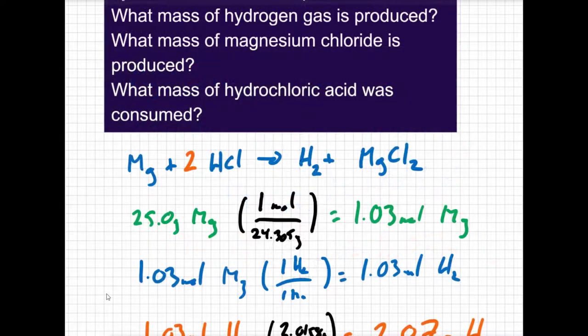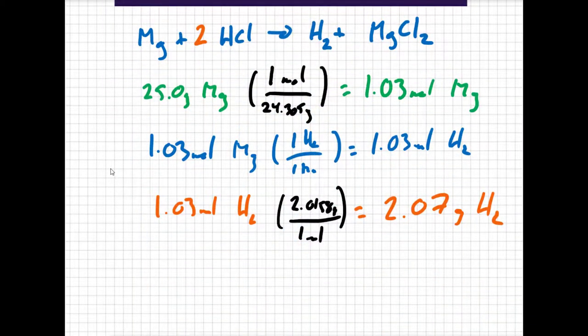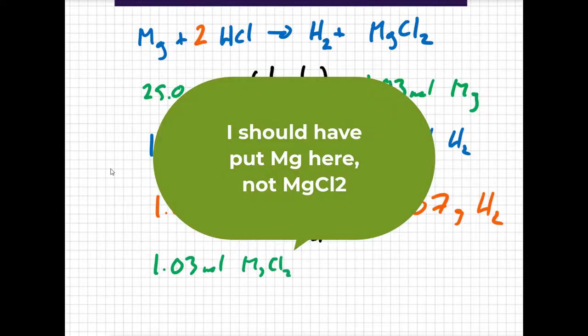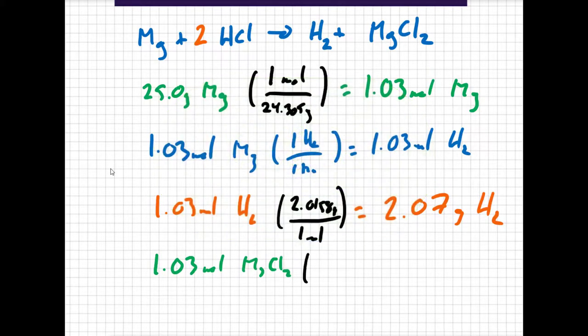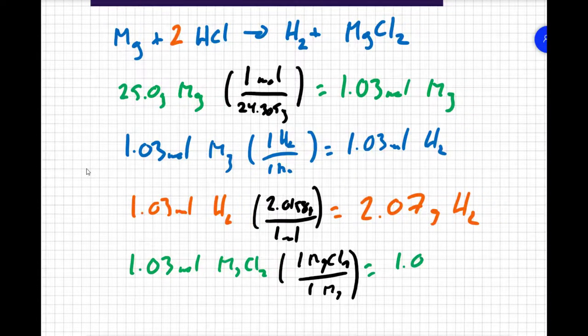Next, the question's asking for the mass of magnesium chloride. Well again, I go back to my moles. I have 1.03 moles of magnesium, and again, I've got a nice one-to-one ratio. There is one magnesium chloride for every one magnesium, so that means I have 1.03 moles of magnesium chloride as well. I love one-to-one ratios.